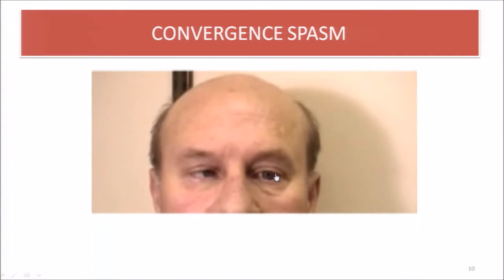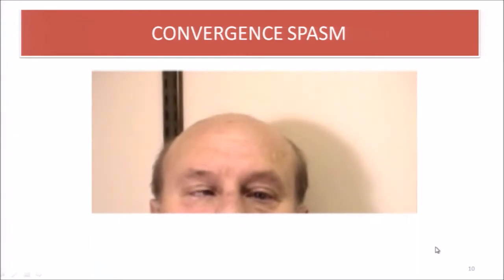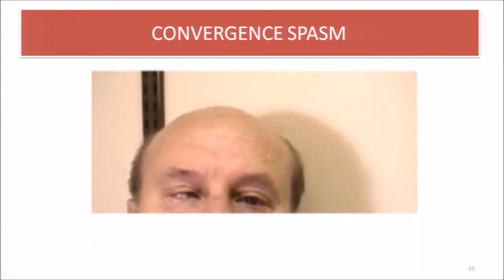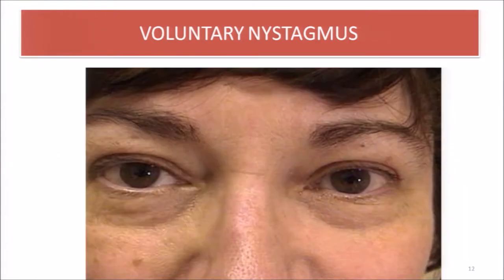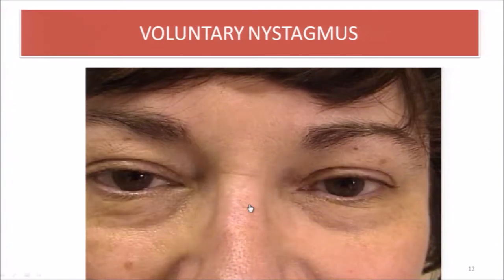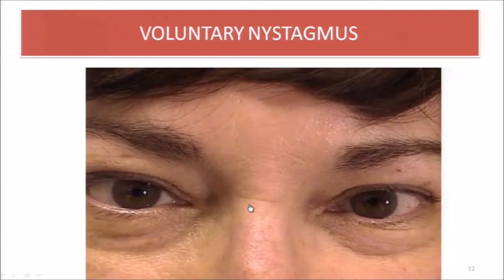In the video demonstration, both pupils are seen going medially — convergence spasm. Voluntary nystagmus, historically used in America by men to avoid military service, represents saccadic flutter initiated by voluntary convergence with no inter-saccadic interval. Voluntary nystagmus varies in amplitude and latency. A smart psychogenic patient can perform this; most clinicians cannot replicate it.